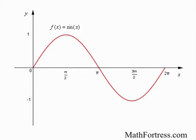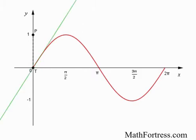Now what I'm going to do is plot a graph with the inputs corresponding to the radian measure and my output corresponding to the measure of the slope of the tangent line at that given input. As you notice, the tangent line initially is positive — specifically, it has a value of 1. So my first point is (0, 1).